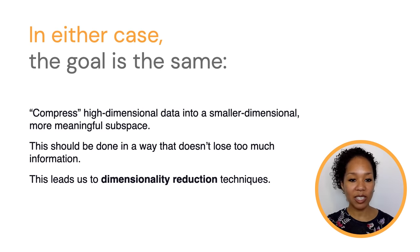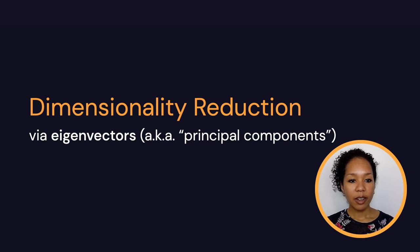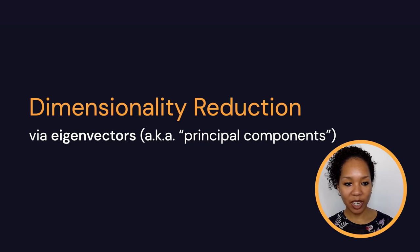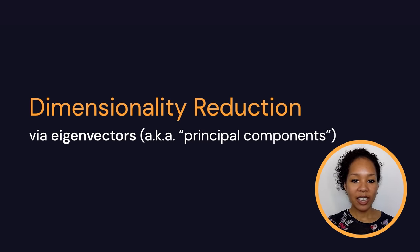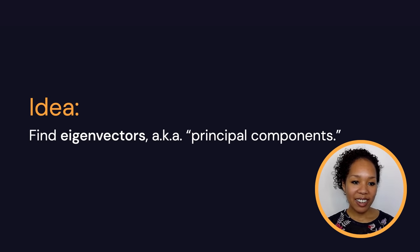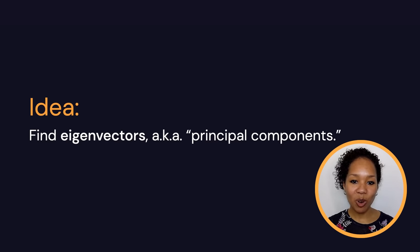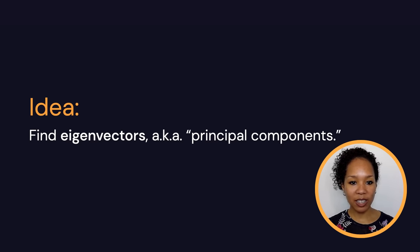This brings us into the larger discussion of dimensionality reduction, which is next on our agenda. In machine learning there are a number of different dimensionality reduction techniques. For this talk, I'd like to use this topic as a way to introduce another concept from linear algebra: eigenvectors. The idea is to find eigenvectors — or what you might know as principal components — so let me first explain what an eigenvector is.